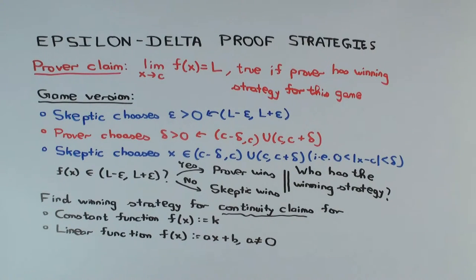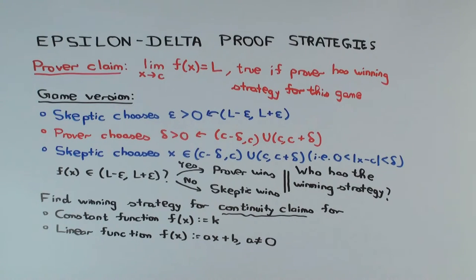This talk is going to be about epsilon-delta proof strategies for linear and constant functions. The idea is we are trying to prove that constant functions and linear functions are continuous. For that we're going to use the epsilon-delta definition of continuity, or rather the epsilon-delta definition of limit, and go through the entire definition and work out a strategy to show that definition holds.